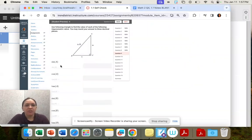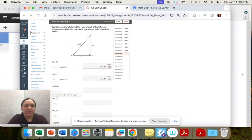So I'm going to type those in. So four divided by square root of 41. Five divided by square root of 41. And then four fifths.